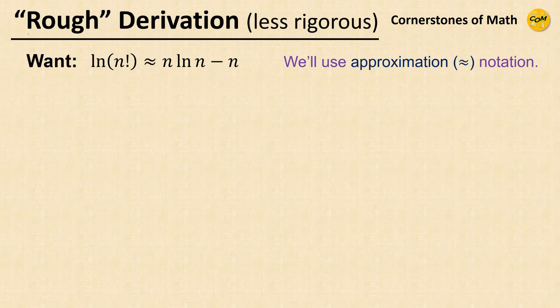First, I will present what I would call a rough derivation of Stirling's approximation. I call it that way because I'm going to play some tricks with the approximately-equal-to notation in the derivation, which you can definitely claim is less mathematically rigorous.